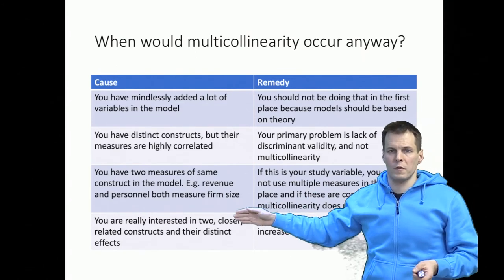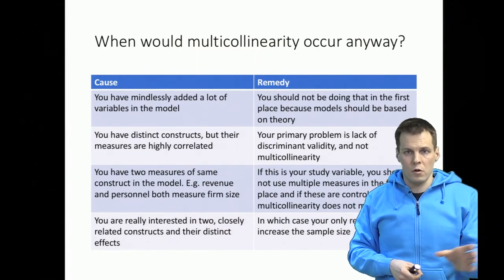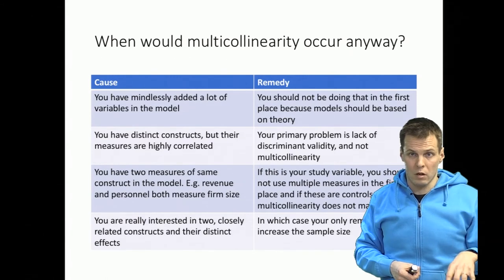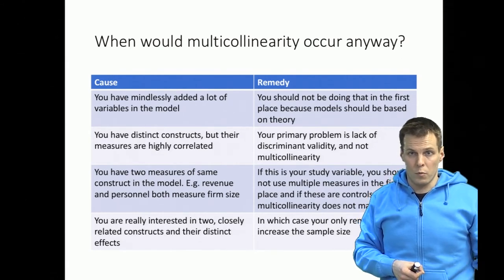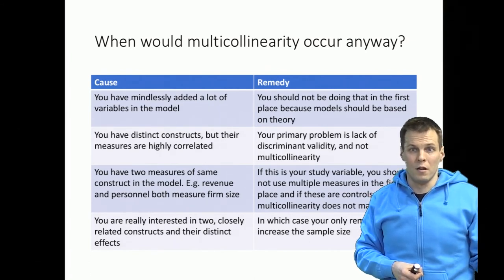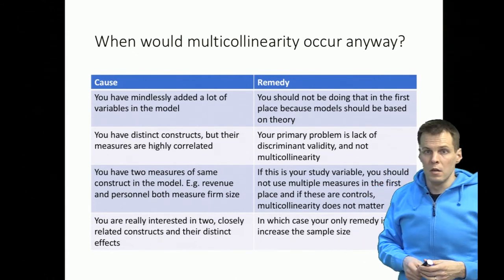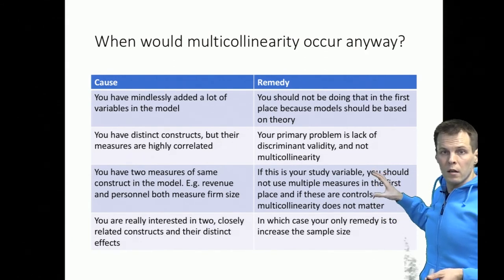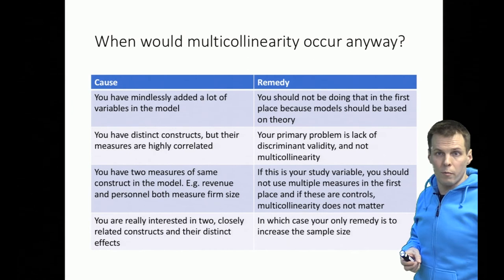Another cause is having two measures of the same construct in the model. For example, if studying the effect of company size, having both revenue and number of personnel as measures of firm size is not a good idea. In the extreme case, if we want to study the effect of a person's height on weight and include both centimeters and inches as separate predictors, it makes no sense to try to get the effect of inches independent of centimeters — in fact that cannot even be estimated. If you have multiple measures of the same thing, you should typically combine them into a single composite measure.